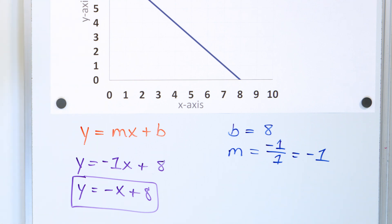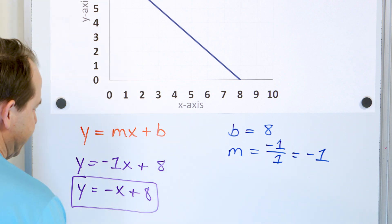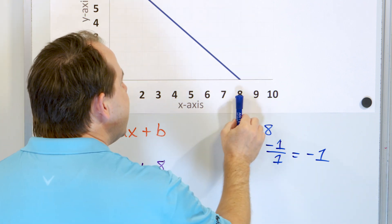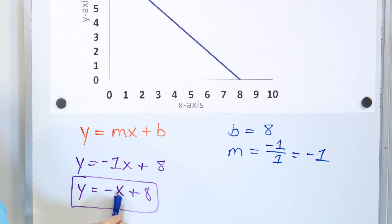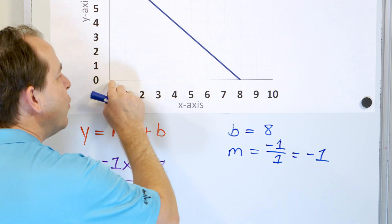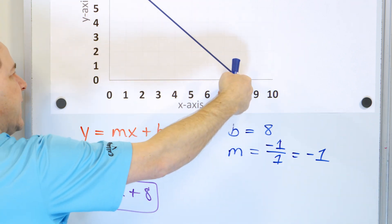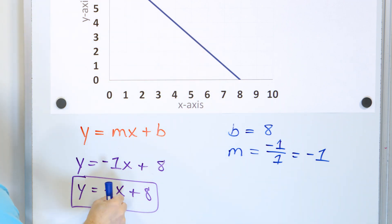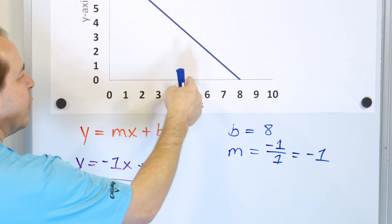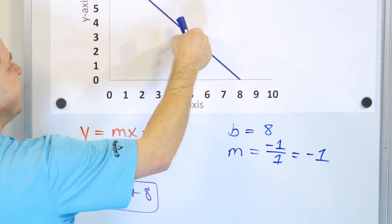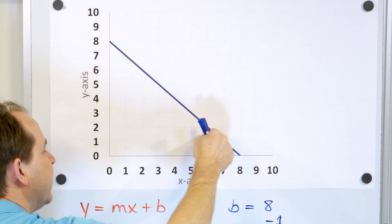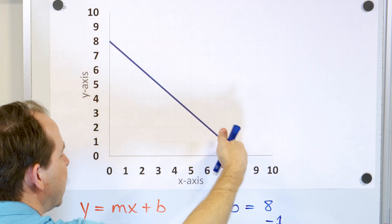Now it's always a good idea to check one or two points on the line. Let's say what happens when x is equal to eight. If we put an input of eight, we have negative eight plus eight, which means we get a y value of zero. So when x is eight, y is zero — that's a point on the line. Let's put a five in for x: negative five plus eight is positive three. So when x is five, y is three, and this point is also on the line.